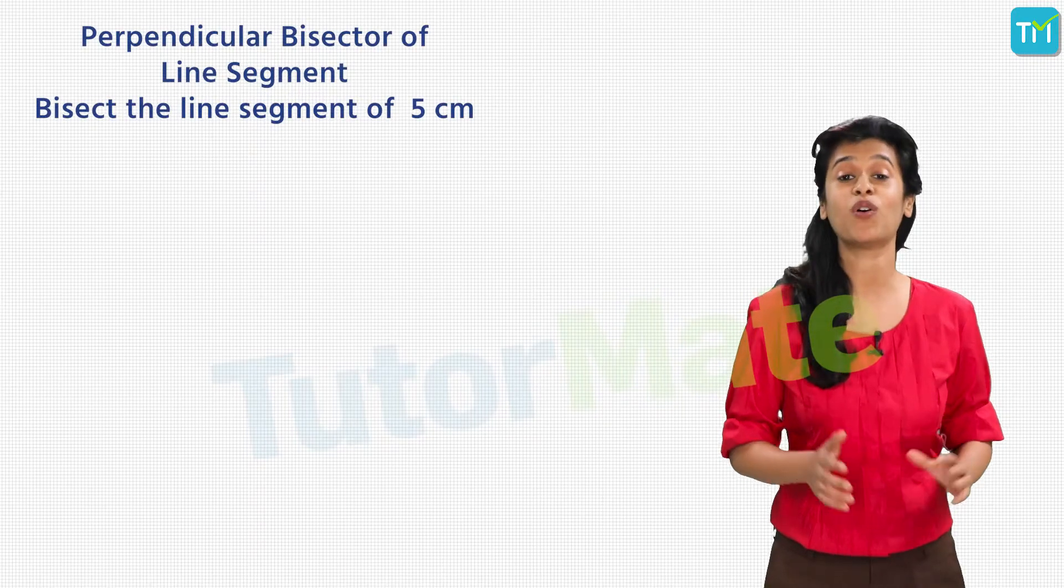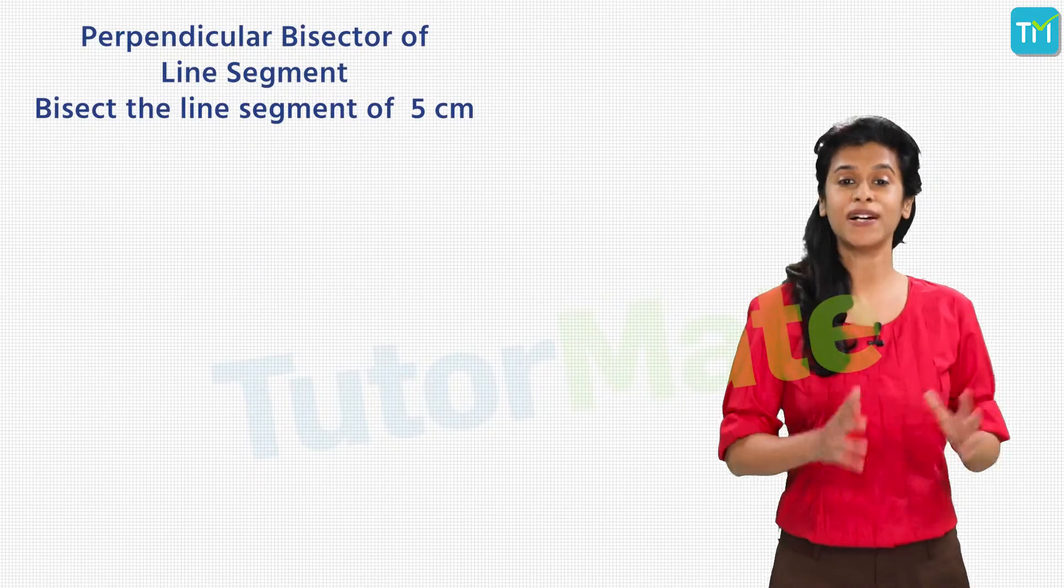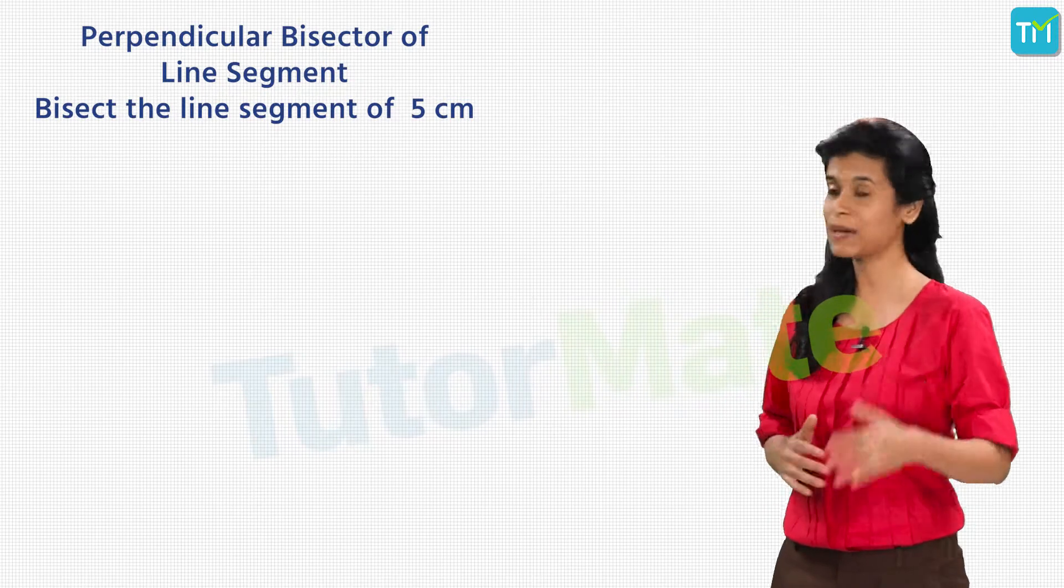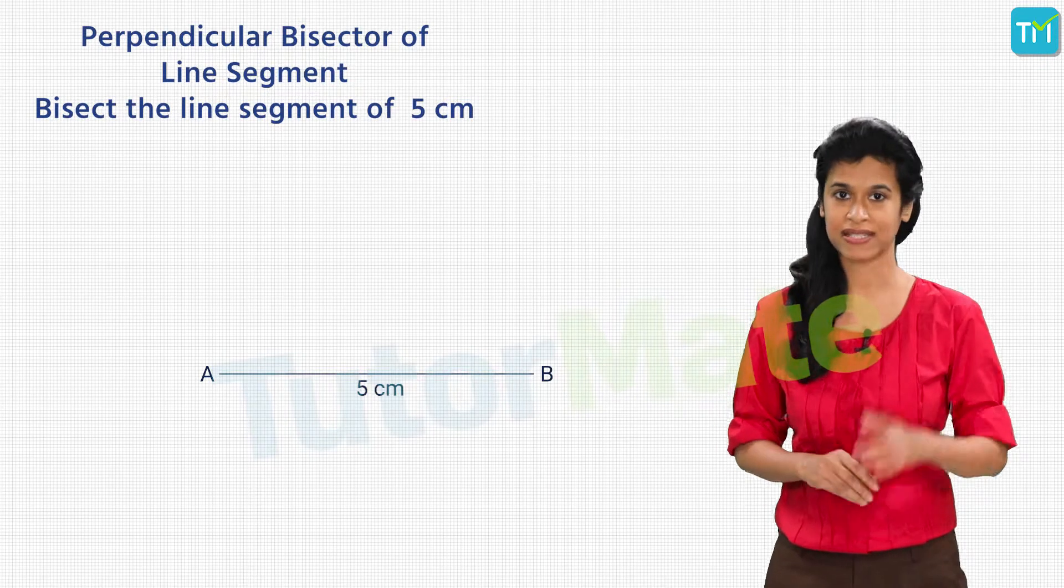Now, let's try to construct a perpendicular bisector of a given line segment. First, we draw a line segment AB of length 5 cm.